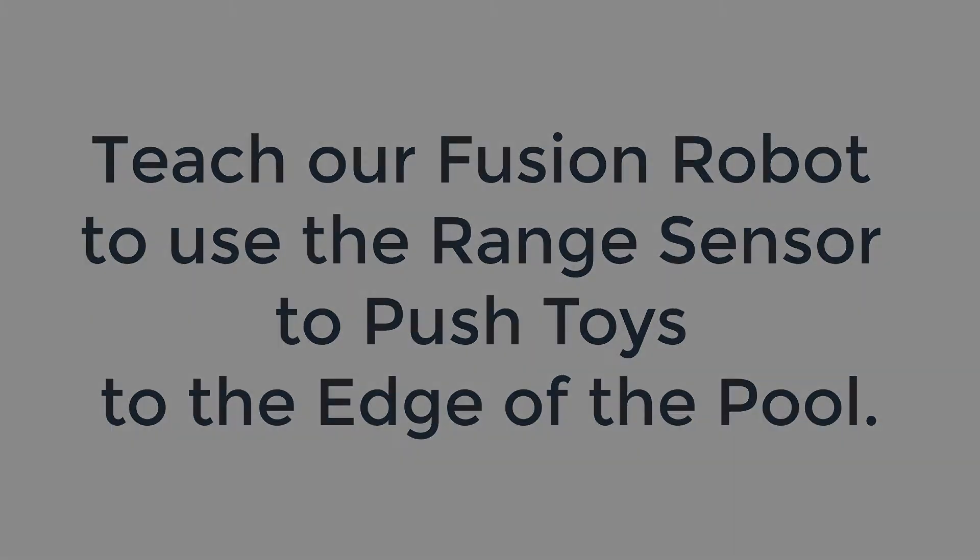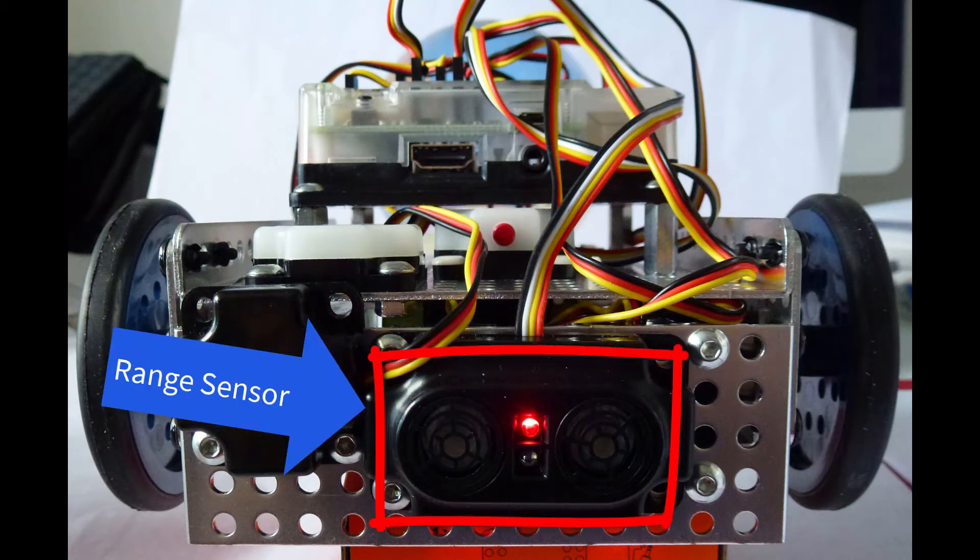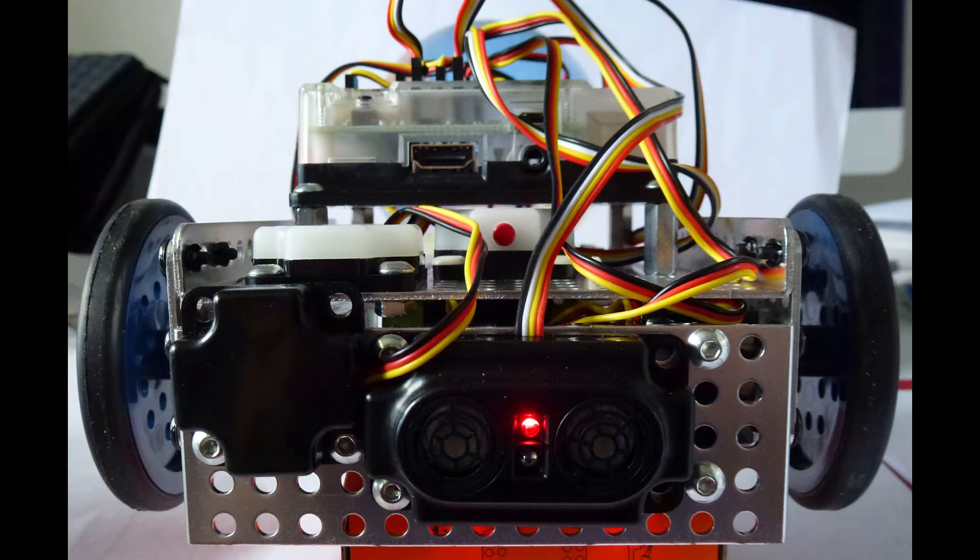Let us see if we can get a more efficient solution to the swimming pool problem by use of the ultrasonic portion of the range sensor. The range sensor is unusual in that it combines two sensors. There is the optical distance sensor, which we will not use in this video, and there is the ultrasonic portion of the sensor, which we will use to locate the toys in the swimming pool.